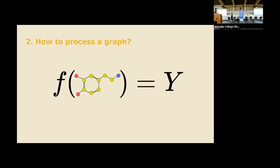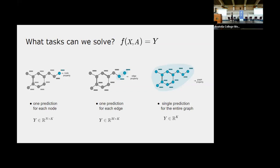Now we know how to store the graph in memory with the feature matrix X and adjacency matrix A. GNNs are quite versatile, supporting three popular tasks: node-level classification, edge-level classification, and graph-level classification. For node-level tasks, we predict something for each node — for example, the type of each atom in a molecule. For edge-level tasks, we predict something per edge — such as whether a bond is single or double. For graph-level tasks, we make a single prediction for the entire graph — for example, predicting the solubility or toxicity of a molecule.